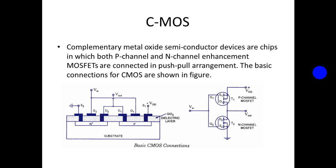In the other case, when the input is kept at a high level, that is +VDD volts, the gate of MOSFET T1 is at 0 potential relative to its source, so T1 will be OFF with resistance R_OFF equal to 10^10 Ω. While the gate of MOSFET T2 will be at positive potential relative to its source, so MOSFET T2 will be ON with its resistance R_ON equal to 1 kΩ. In this case, the output will be approximately 0V.